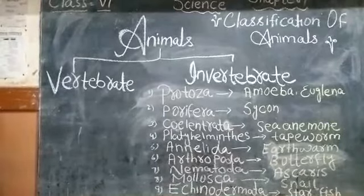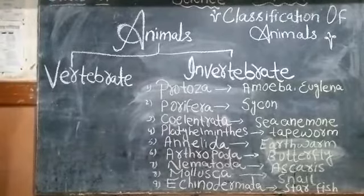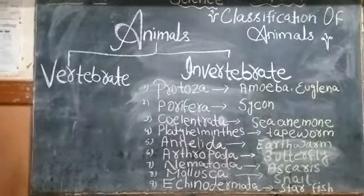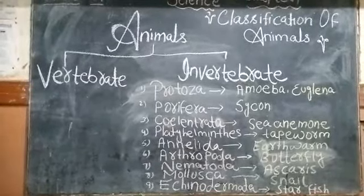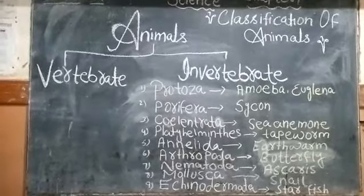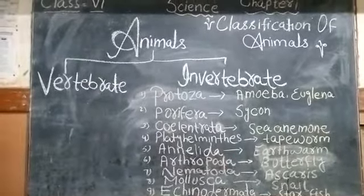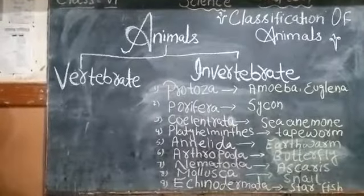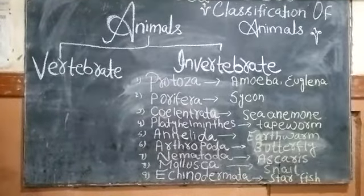Number 7: Phylum Nematoda. These are roundworm-type animals. Number 8: Phylum Mollusca. In this phylum, the body is soft. Sometimes the body is covered by a hard shell.